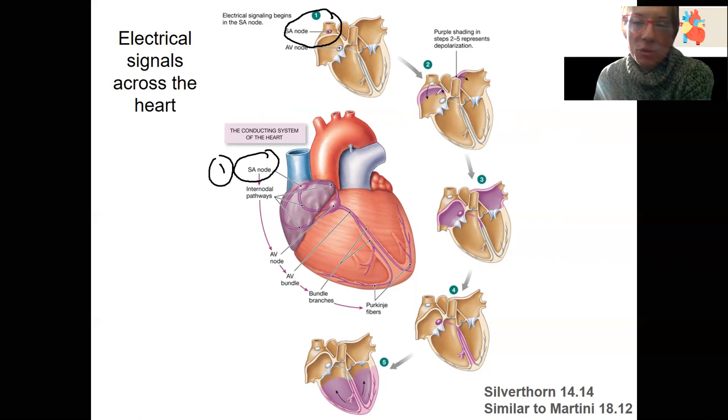And those action potentials are going to spread across the atrial muscle, the myocardium of the atria, and depolarize the atria. These are called internodal pathways to get to the AV node. So that's what's happening right here. This purple shading represents depolarization spreading across the atria until it gets to the AV node. So this is three. This is number three.